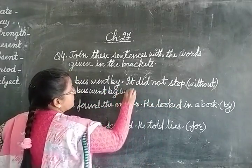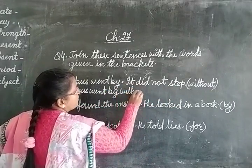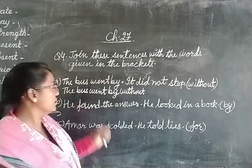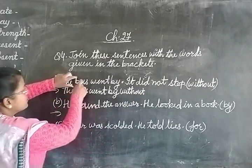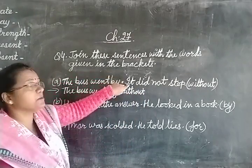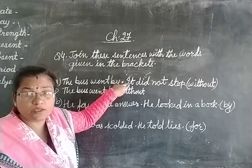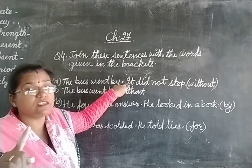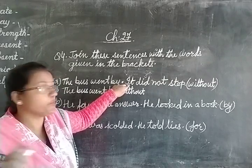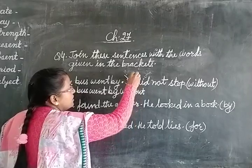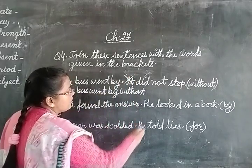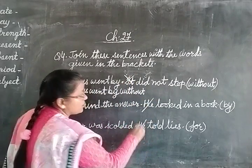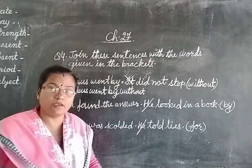We write 'without.' Now dear children, here there is 'bus' and instead of bus we are using the pronoun 'it.' So when we make one single sentence there is no need of the pronoun. So we will remove it. We will remove 'it' here.